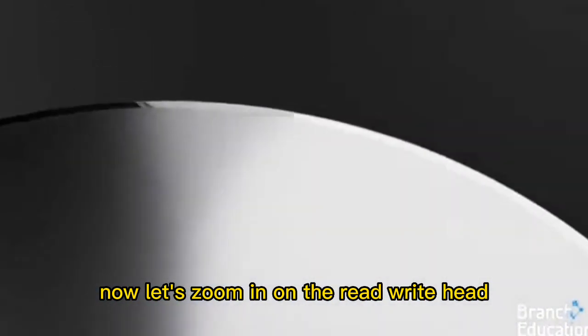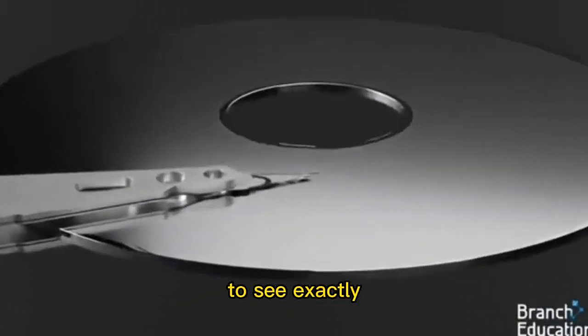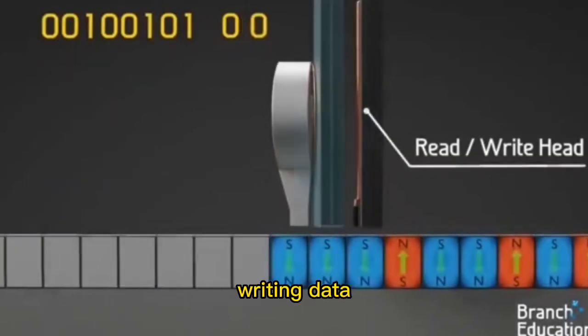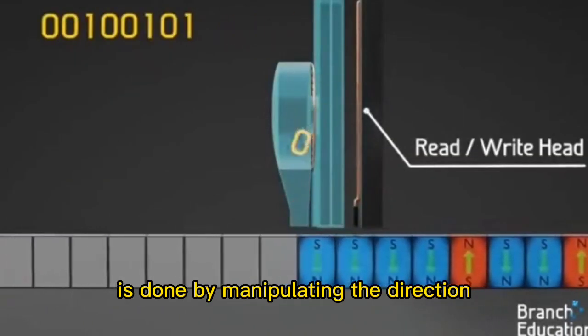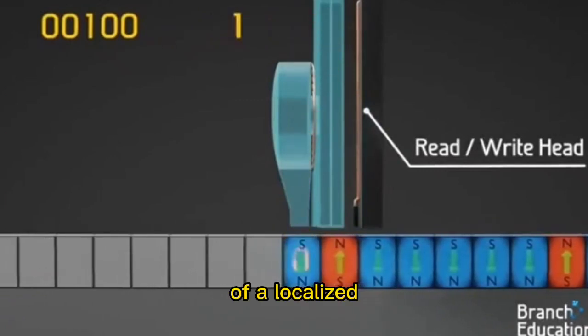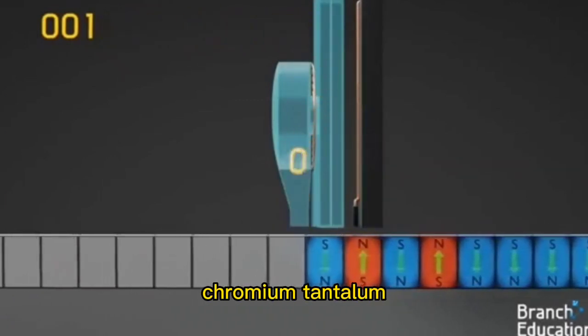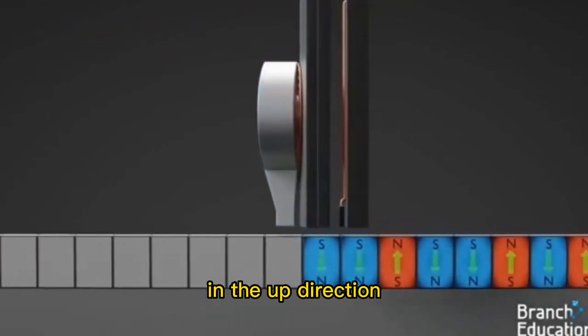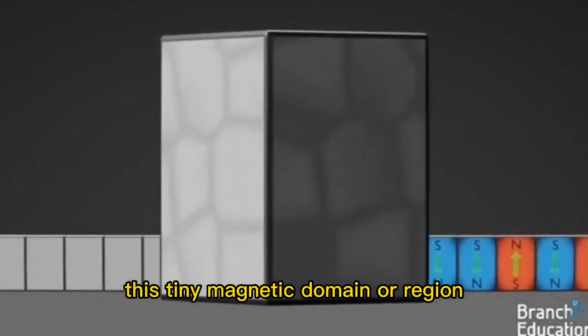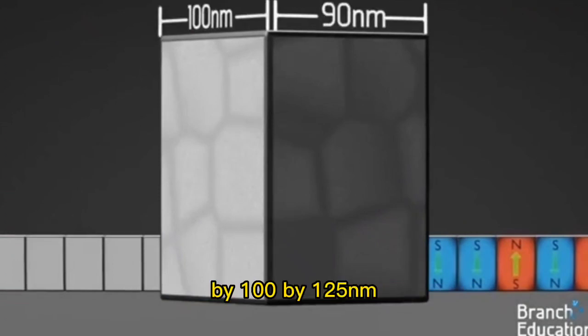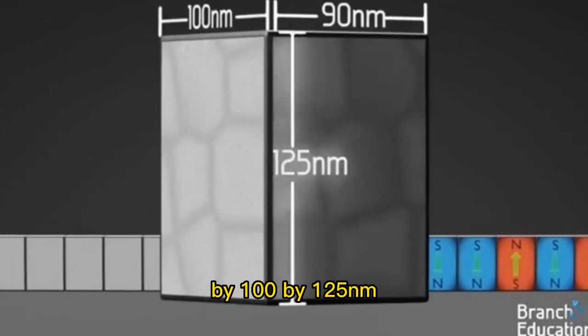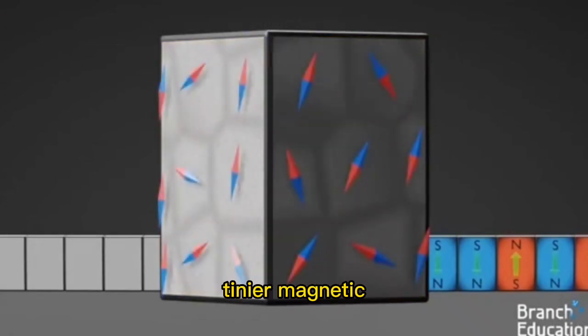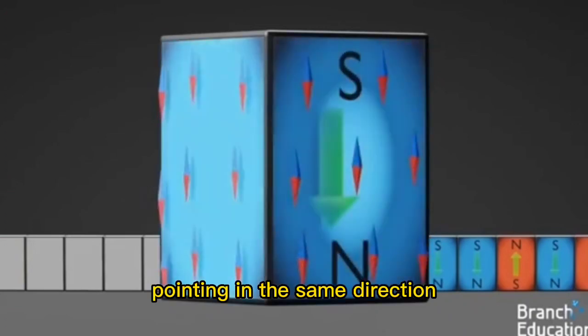Now let's zoom in on the read write head and the disk to see exactly how data is written and read. Writing data to the disk is done by manipulating the direction of magnetization of a localized region or domain of the cobalt chromium tantalum layer in the disk and forcing the region to be magnetized in the up direction or the down direction. This tiny magnetic domain or region is around 90 by 100 by 125 nanometers, and when magnetized, all the atoms will have their even tinier magnetic north-south poles pointing in the same direction.